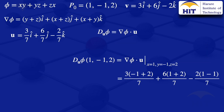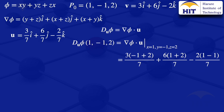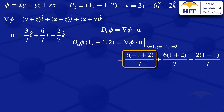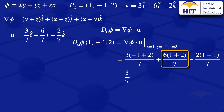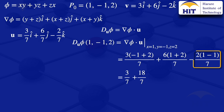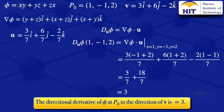Simplifying: the first term is 3 × 1/7 = 3/7. The second term is 6 × 3/7 = 18/7. The third term simplifies to 0 because 1 - 1 = 0. So we have 3/7 + 18/7 = 21/7, which equals 3. The directional derivative of φ at point P₀ in the direction of v is 3.